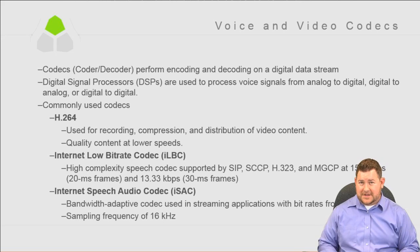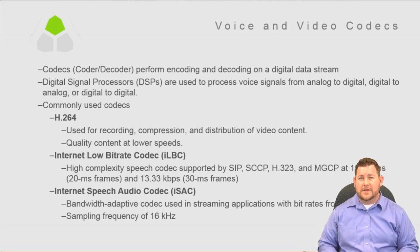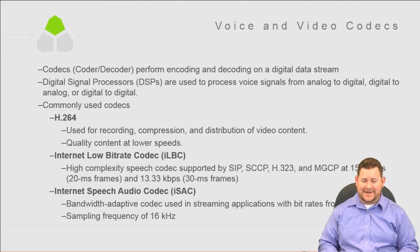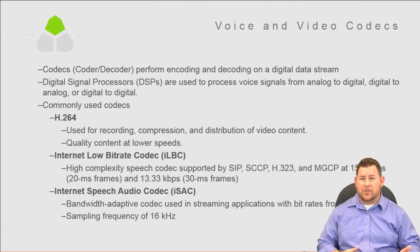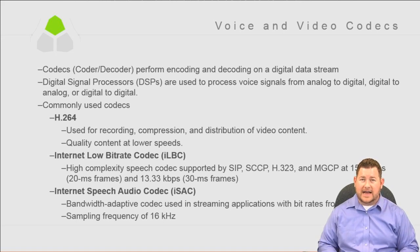The commonly used codecs you're going to see in the CCIE Collaboration written and lab exams: the first new one is H.264, which is a video codec used for recording, compression, and distribution of video content. The goal is to provide quality streaming at lower speeds. For example, an H.264-enabled video phone like the 9971 can make a video call across a network to another H.264 endpoint. The next codec is Internet Low Bit Rate Codec, which is iLBC.